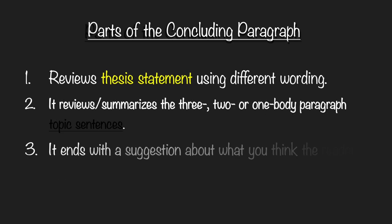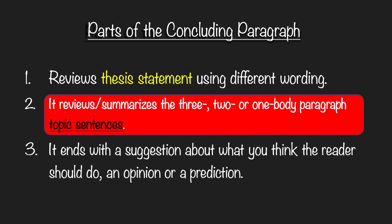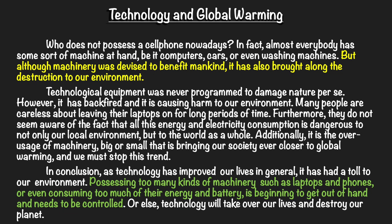Now let's take a look at the second part. It reviews and summarizes the three, two, or more body paragraph topic sentences. In our case, we have one topic sentence, and it reads: 'Technological equipment was never programmed to damage nature per se.' So this is our topic sentence — the first sentence of your body paragraph. So in our conclusion, we can say something like: 'Possessing too many kinds of machinery, such as laptops and phones, or even consuming too much of their energy and battery, is beginning to get out of hand and needs to be controlled.' So basically, I summarized the topic sentence and the body paragraph.